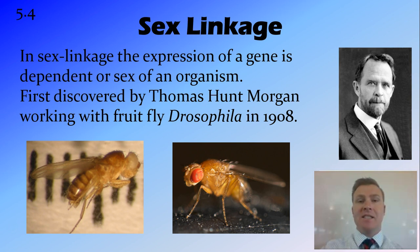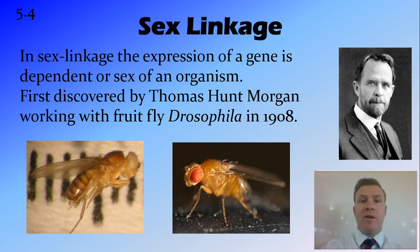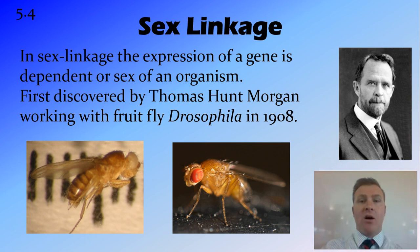Sex linkage is a case where the expression of a gene is dependent on the sex of an organism. This means that a gene is going to be expressed differently whether it's in a male or a female, and this is why we don't get the normal Mendelian ratios, because it's sex dependent. It was first discovered by Thomas Hunt Morgan, who started experiments looking at fruit fly Drosophila in 1908, and then won a Nobel Prize in the 1930s.